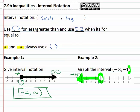So interval notation, we use small comma big, curved bracket for less than or greater than, square bracket when it's or equal to.